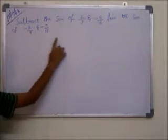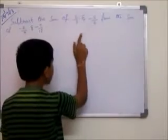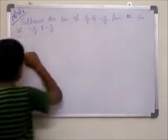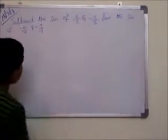Today's problem is subtract the sum of 2 by 3 and minus 5 by 6 from the sum of minus 2 by 9 and minus 7 by 18.